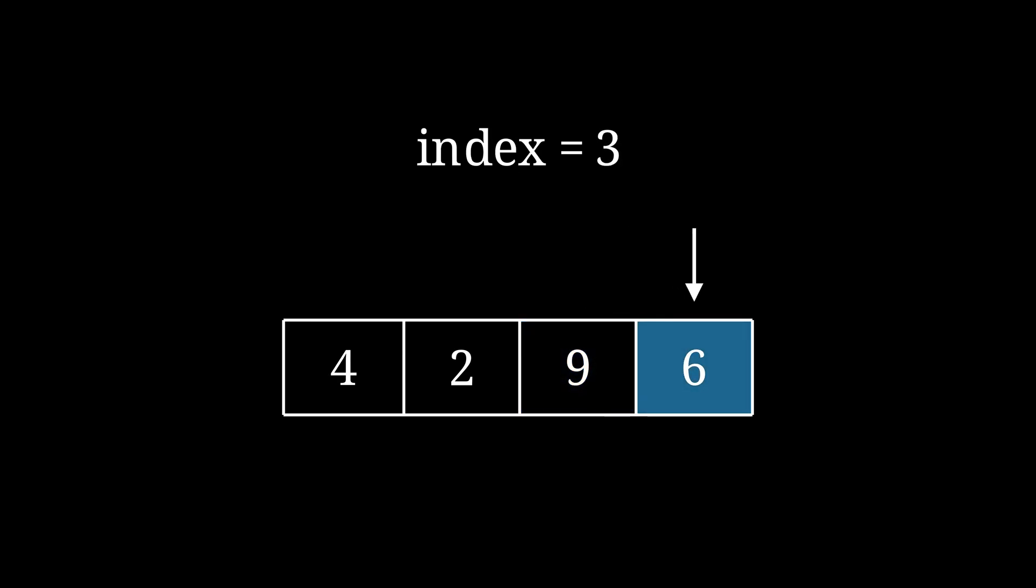But if we try using an index that's greater than 3, we go outside the array's bounds and access memory that doesn't belong to it. This is called a buffer overflow, and it can cause reading incorrect values, crashes, and security vulnerabilities.